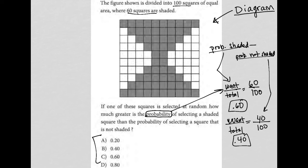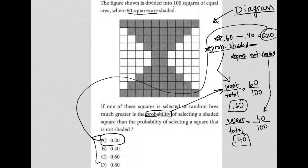So probability shaded, which is 0.60, minus probability not shaded, which is 0.40, gives us 0.60 minus 0.40, which equals 0.20, which is answer choice A.